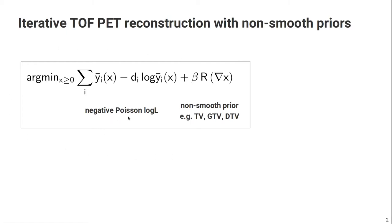We have the negative Poisson log-likelihood or the data fidelity term. To evaluate that part, of course, we have a forward model including our time-of-flight forward projector and prior and the weighting factor.